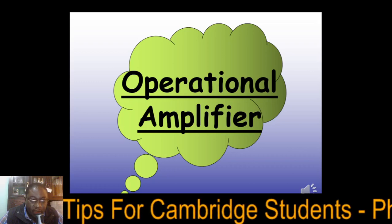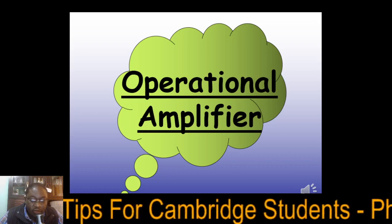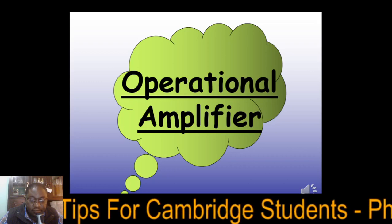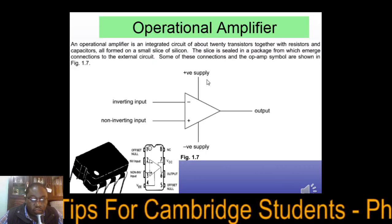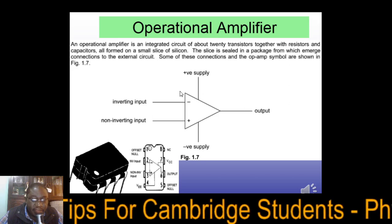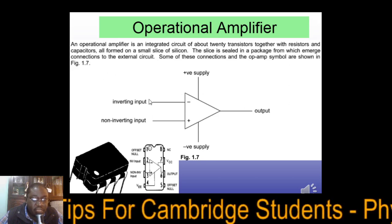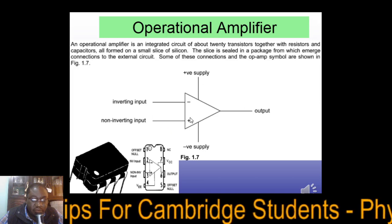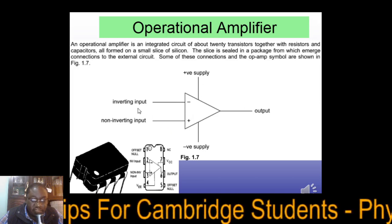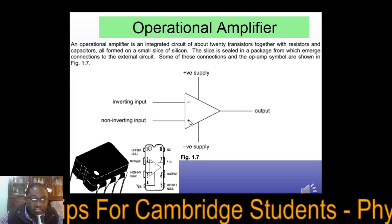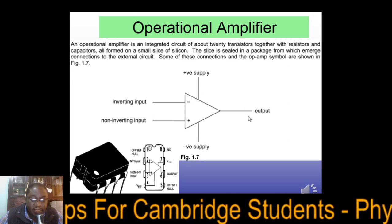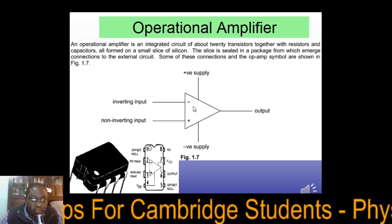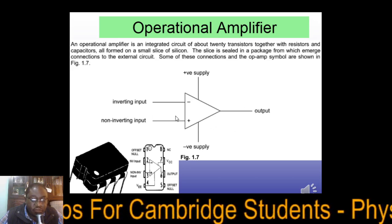In this video I'm going to explain how an operational amplifier works. An operational amplifier has two terminals: the inverting input and the non-inverting input. Please don't call them plus and minus — they are the inverting input and the non-inverting input. We've also got a positive and negative supply, and then we've got the output.